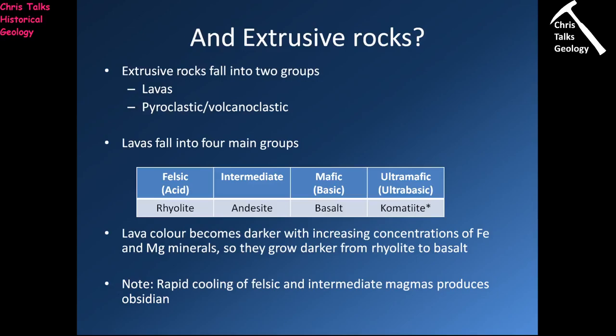Hello everybody, this is Dr. Christopher White and we're back to part two of rocks part one. We just had a quick discussion about plutonic rocks and now let's think about volcanic rocks. In terms of volcanic rocks, also called extrusive rocks, there are actually two different types: rocks produced by the lava flow itself, and rocks produced during explosive volcanic eruptions.